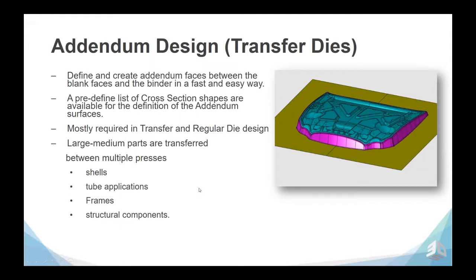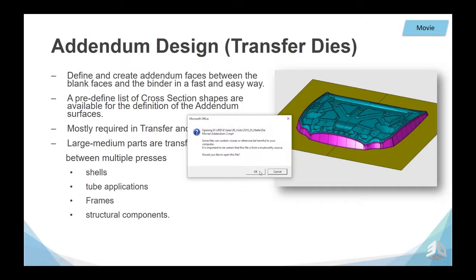For addendum design, mostly for transfer dies, you can define and create addendum faces between the blank faces and the binder in a fast and easy way. A predefined list of cross sections can be used in a dialog. It is mostly required for transfer and regular die design, applicable for large or medium parts, and it will create the shape between multiple presses for applications like shells, tube frames, and structural components.